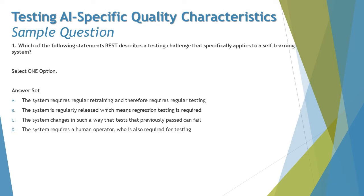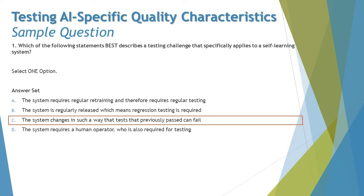Option D says: the system requires a human operator who is also required for testing. That's not correct either, because a system requiring a human operator is unlikely to be called self-learning. The correct answer is C — the system changes in such a way that tests that previously passed are now failing.